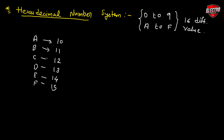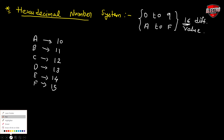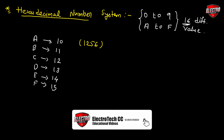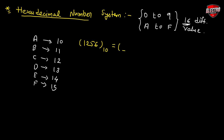Hexadecimal number system uses 16 different values, that's why the base of the hexadecimal number system is 16. For example, we have the number 1256 in the decimal number system and we have to convert it into the hexadecimal number system. Here the base is 16 because we have 16 different values. The steps are similar to what we discussed earlier.